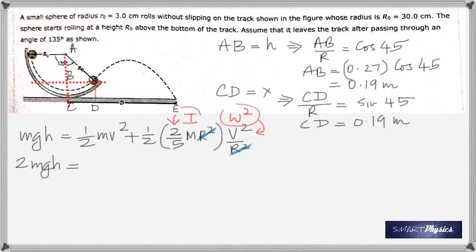Multiplying throughout by 2 to get rid of this half, and noting that 2/5 is 0.4, you have 1 plus 0.4 which is 1.4. The masses cancel. When you rearrange that and plug in the value for h, remember h is AB which we found to be 0.19 meters.